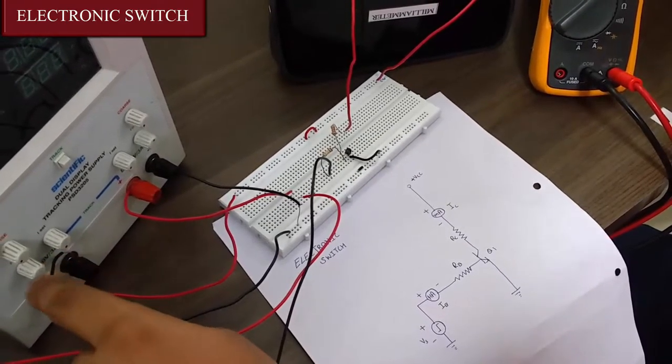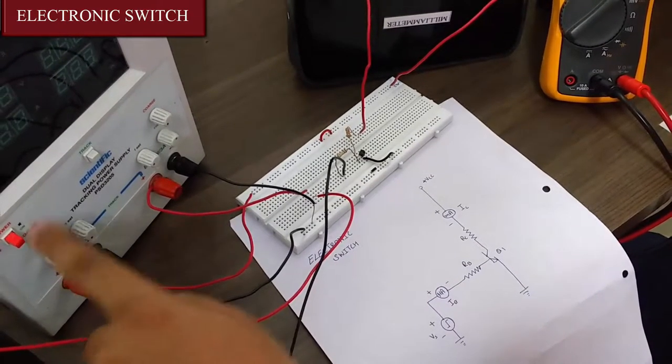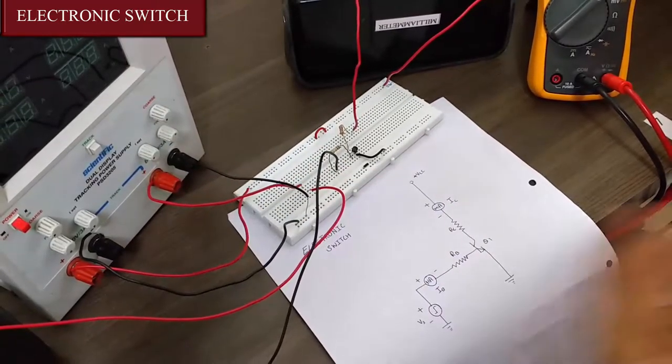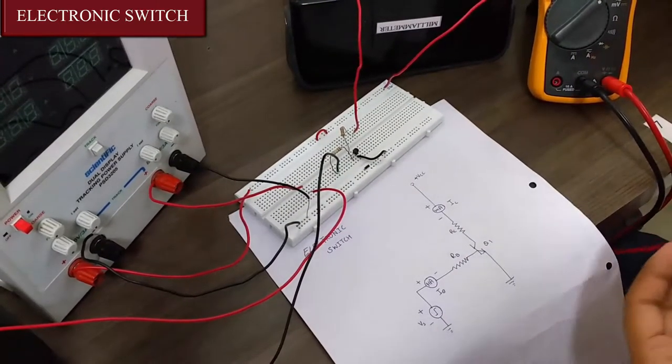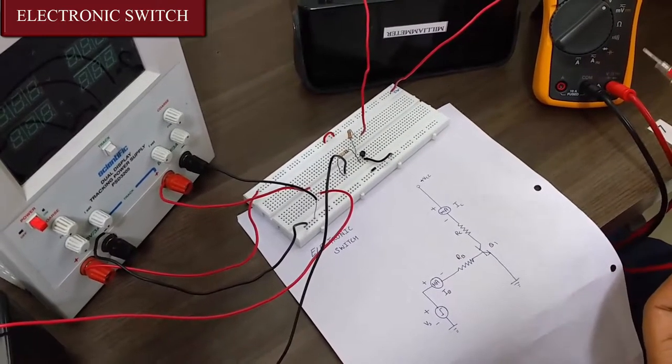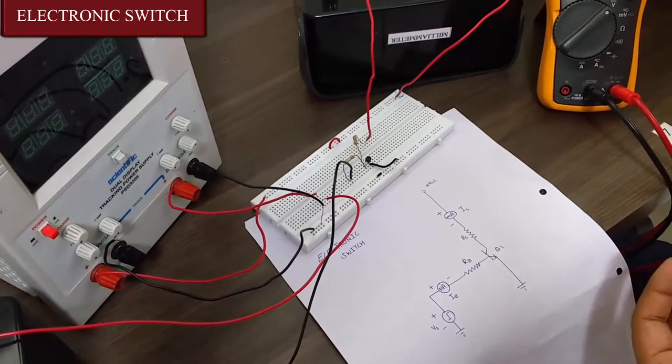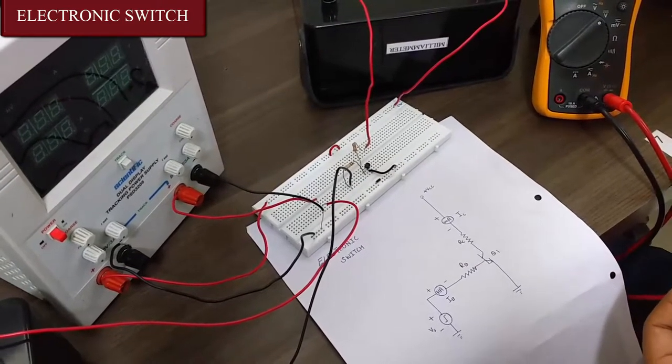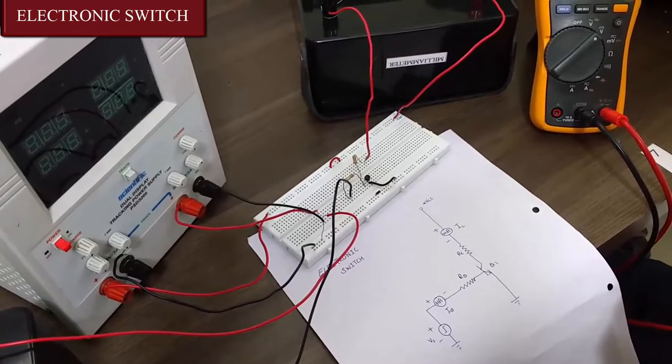For VCC this supply gives us VCC and for VS this supply gives us a square waveform. The square waveform is achieved by switching the voltages from 0 to 5 and 5 to 0. Now let us apply the inputs and check the output.